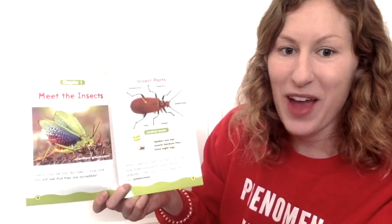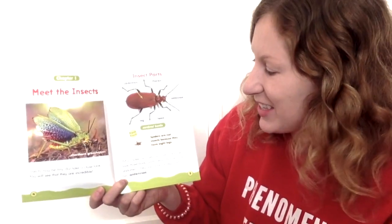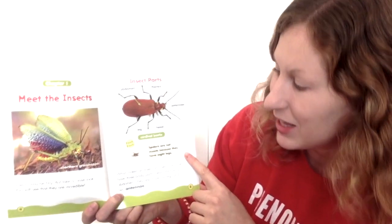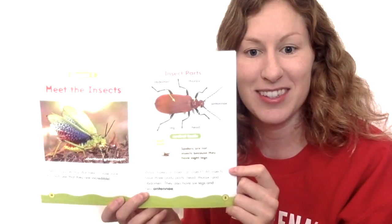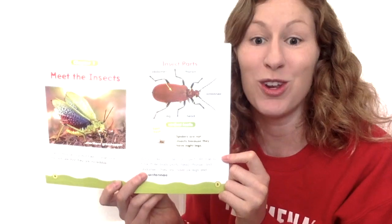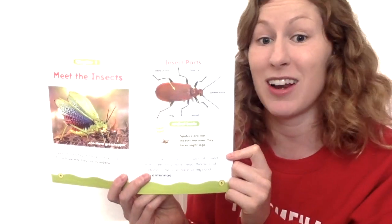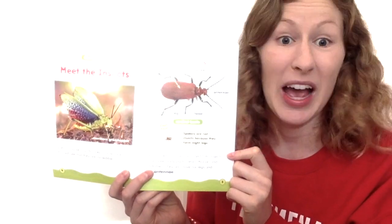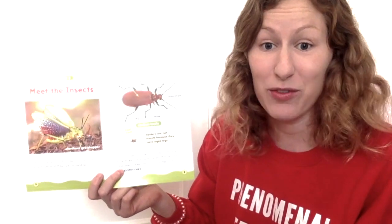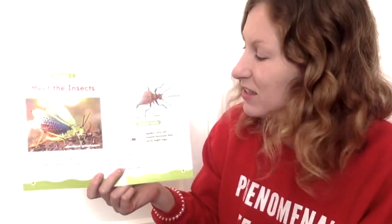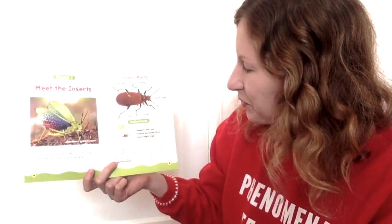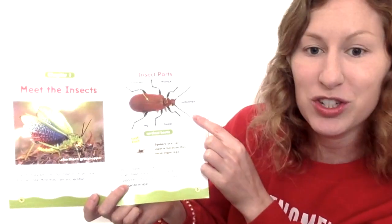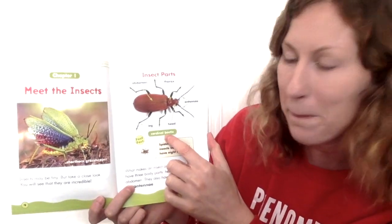We have a fast fact right here. Spiders are not insects because they have eight legs. Give me a thumbs up if you knew that spiders had eight legs and that they weren't an insect. I didn't — that's a brand new fact for me. I thought spiders were insects. And this insect up here that we just looked at is called a cardinal beetle.